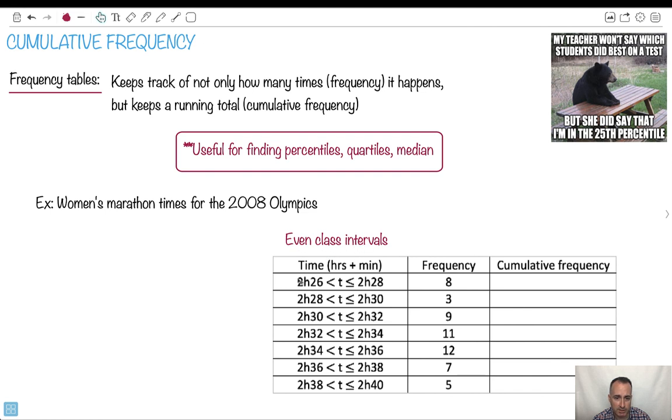So you notice like 2 hours 26 until 2 hours 28, and then 28 to 30. So there's always the same interval here. And here we have the frequency. So there's 8 of these, 3 of these, 9 of these, and so on. Well, so far, this isn't so weird. The only new part here is this cumulative frequency part. That's the new part.